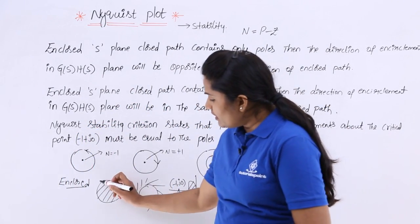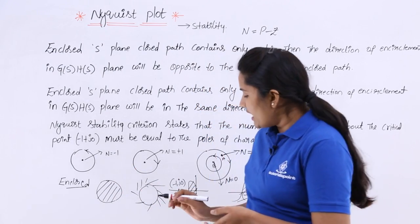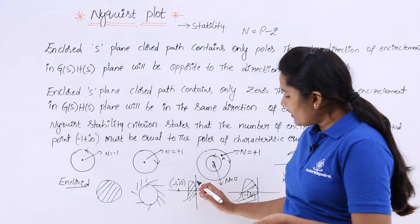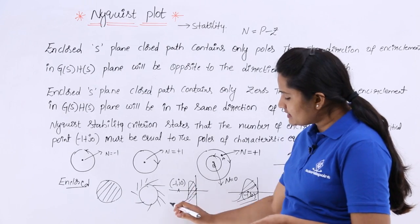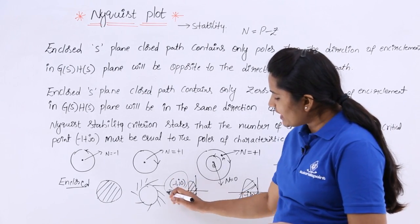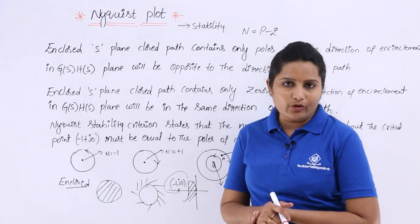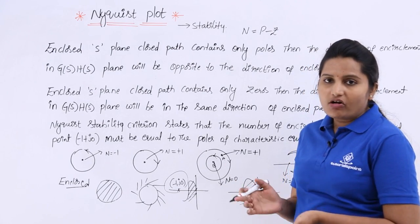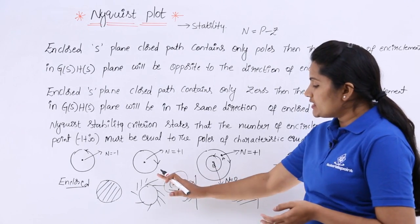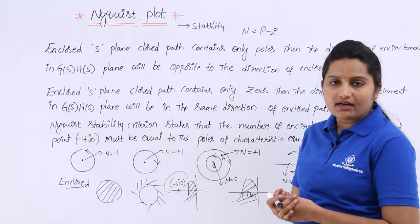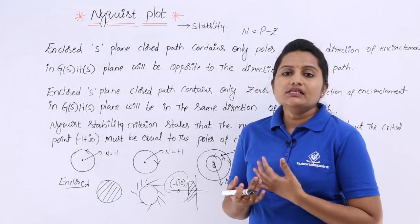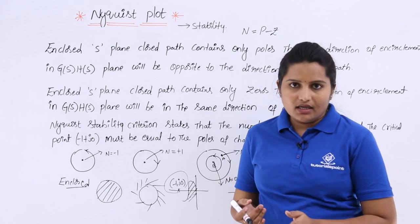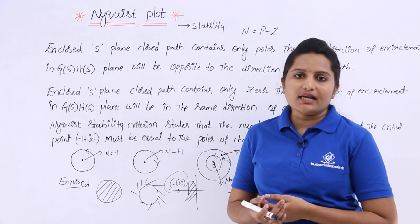The area inside this circle is enclosed. When represented one way, the area outside the circle is enclosed; when represented another way, the area inside the plot is enclosed. The point minus 1 + j0 is always called the critical point. If this critical point is included in the enclosed path, we cannot say the system is absolutely stable. Whenever this critical point is outside the enclosed area, then we can say the system is absolutely stable. These are among the many criteria to determine stability according to the Nyquist stability criteria.